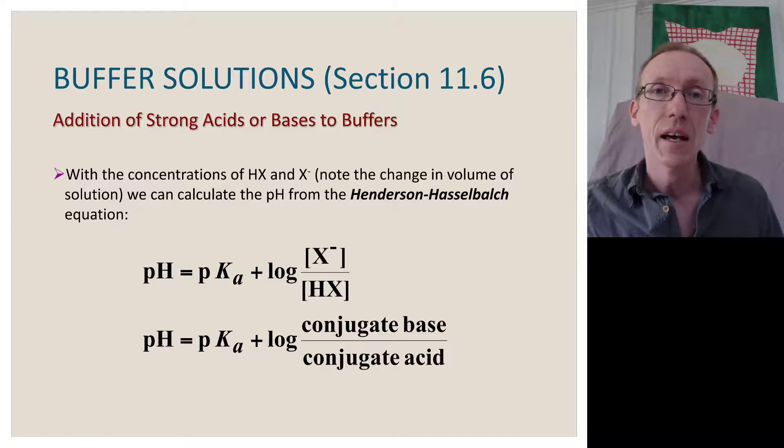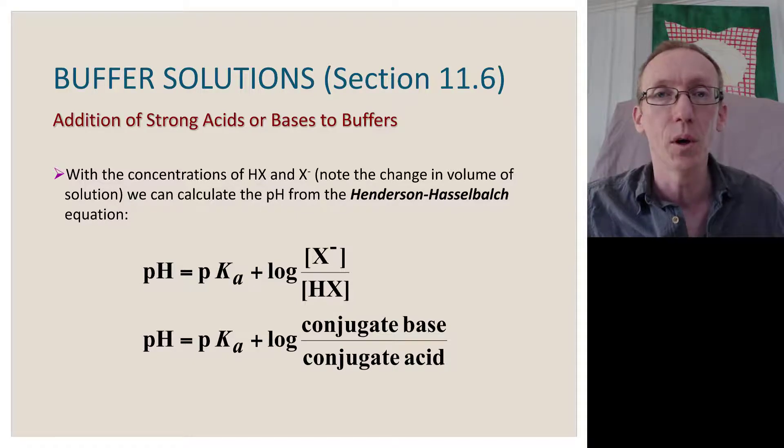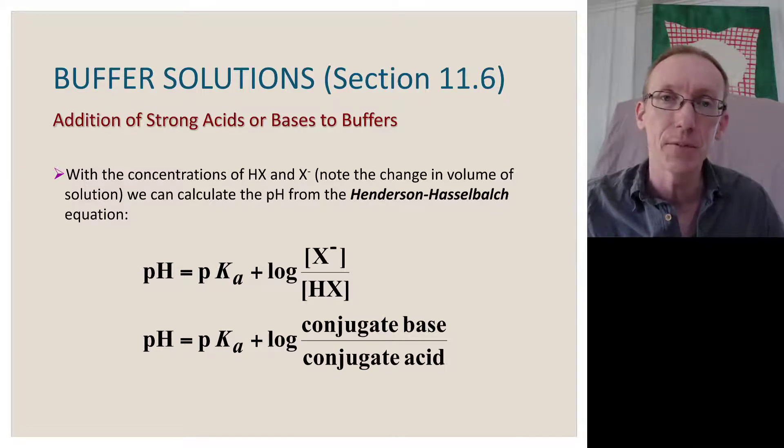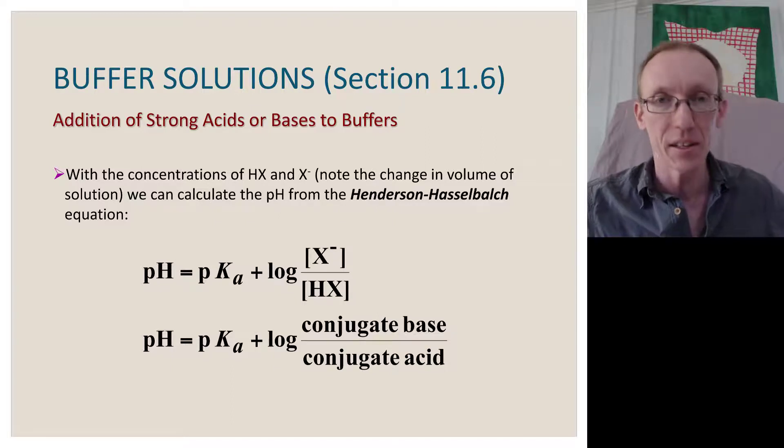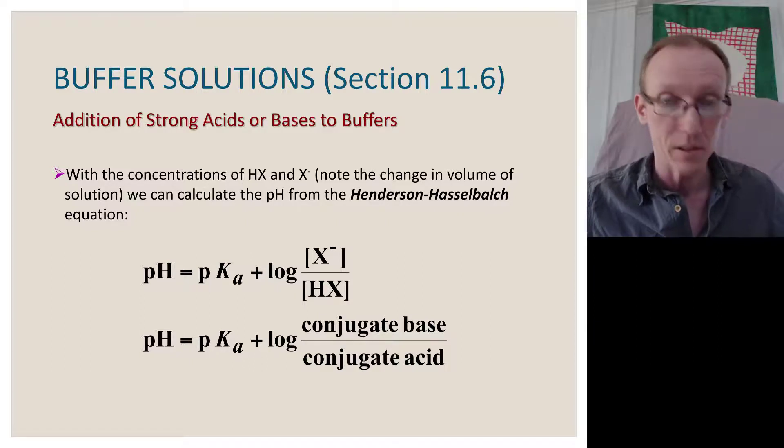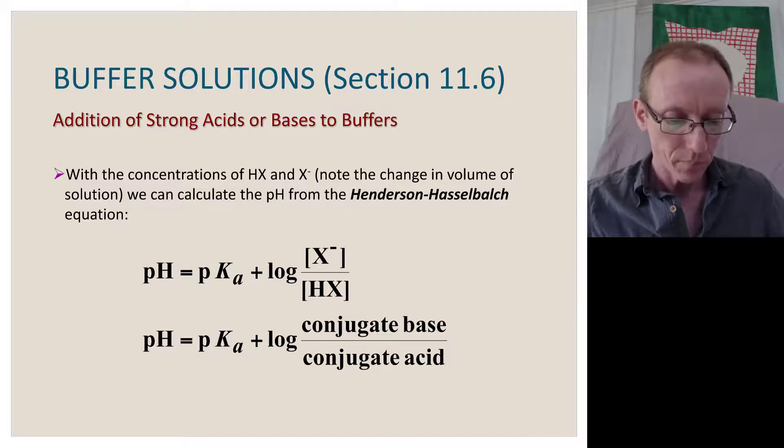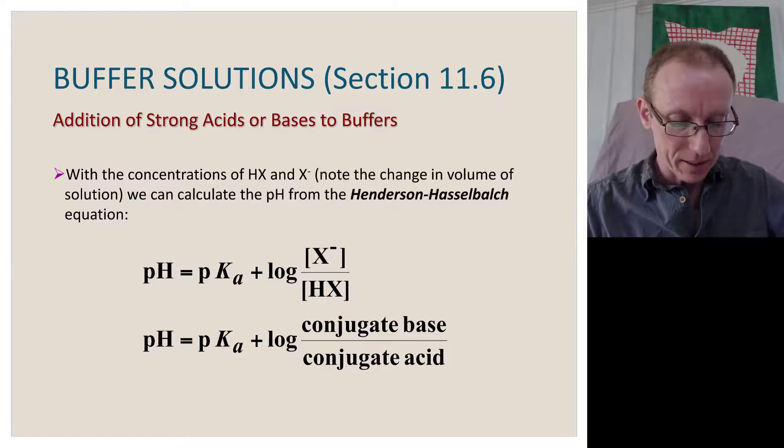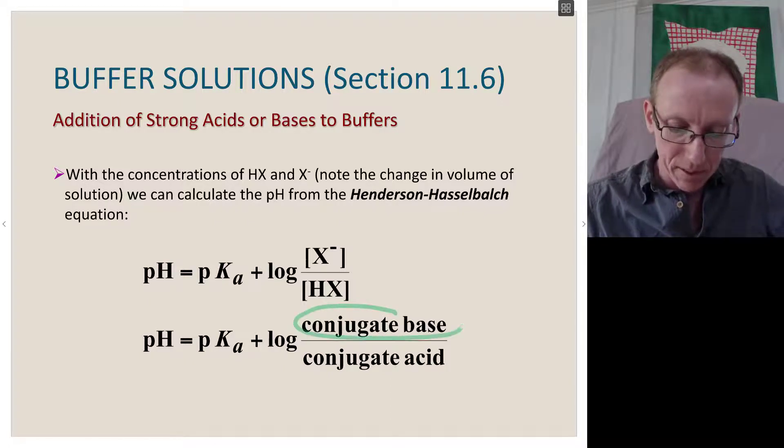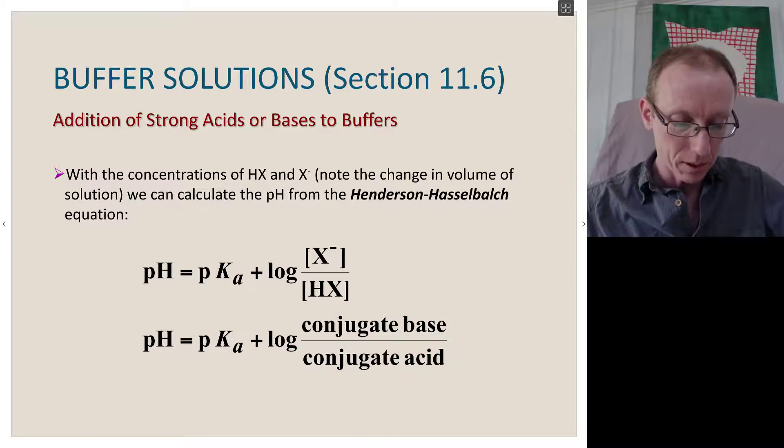This is used a lot in labs all over the world that deal with chemicals, because we often want to have a pH that's defined in a narrow range that won't change if we're adding acidic or basic species to it. The Henderson-Hasselbalch equation is that the pH equals the pKa plus the log of the concentration of the conjugate base divided by the concentration of the weak acid or conjugate acid.